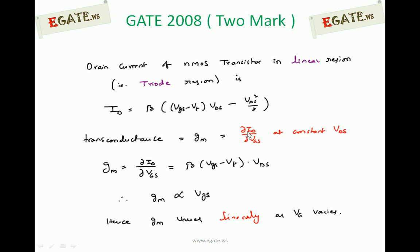Substitute the ID equation and differentiate with respect to Vgs. So transconductance equals ∂ID/∂Vgs = β(Vgs - Vt)Vds.